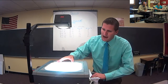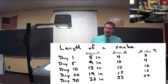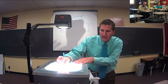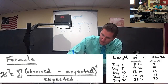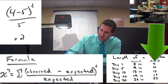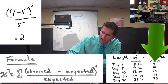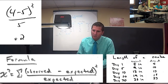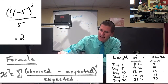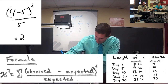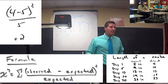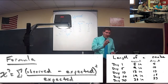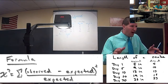Let's start with Farmer Joe. On his first day, he measured his snake to be four inches. We observed four inches when it's supposed to be five — four minus five is negative one. We square that, we get one. We divide that by the expected length of five, and we get a value of 0.2. Any value between 0 and about 0.5 is relatively normal.